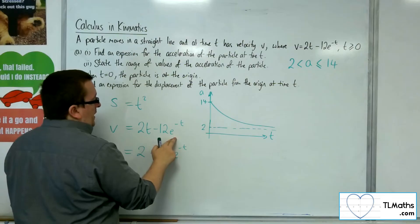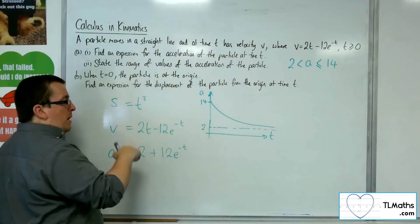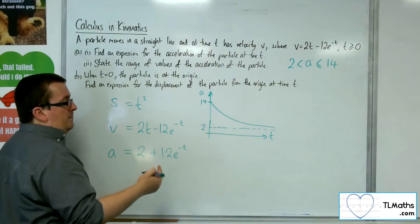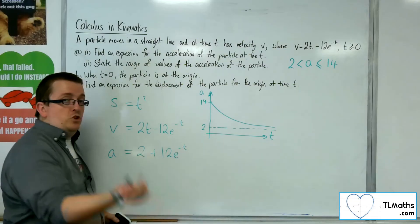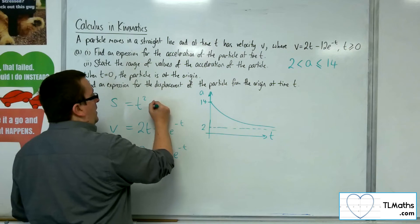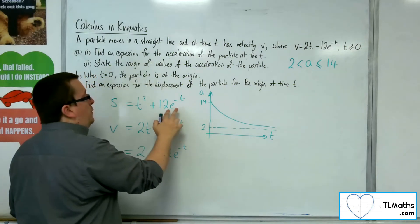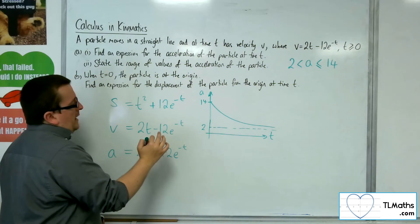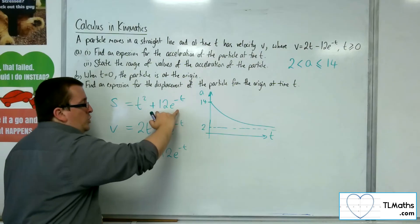e to the minus t will integrate to minus e to the minus t, because e to the minus t differentiates down. So integrating back up, we're going to get plus 12e to the minus t. If you're not too happy with that, just think about if I differentiate this, I get back to this.